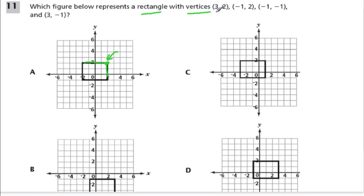So let's check one point at a time. And since this is multiple choice, hopefully 3, 2 won't be in every one. So here's 3, 2, 1, 2, 3, and up 2. So this one's out, doesn't even have that point.